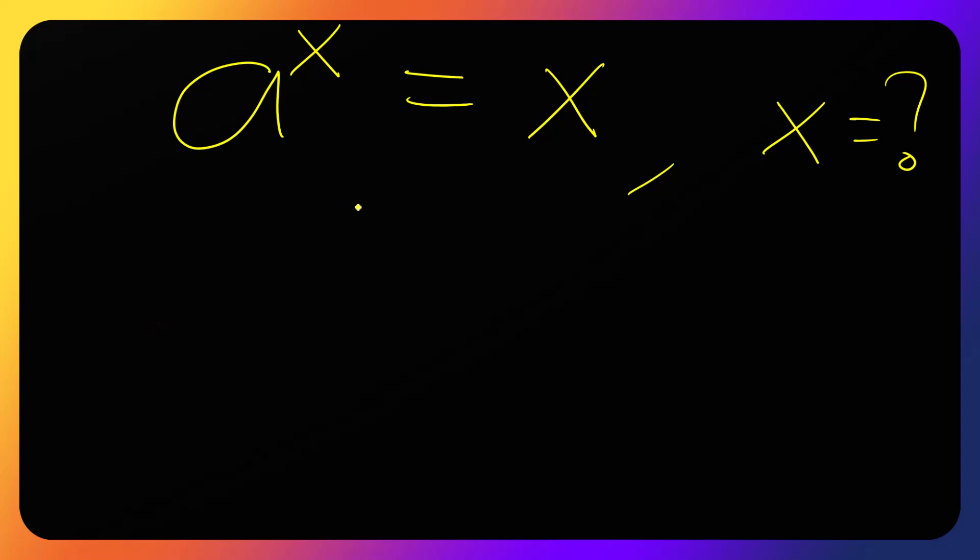Now how do we find x here? So that will be finding x in terms of a. We have a to the exponent x equals to x. Now how do we solve for or how do we find x?